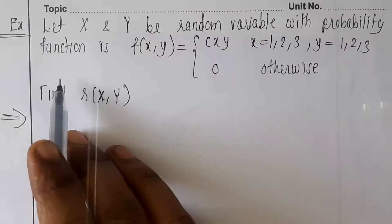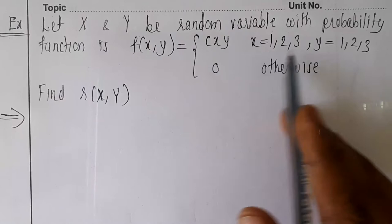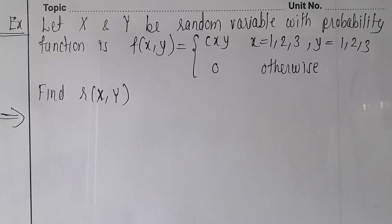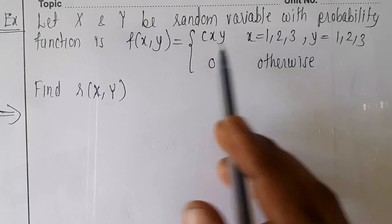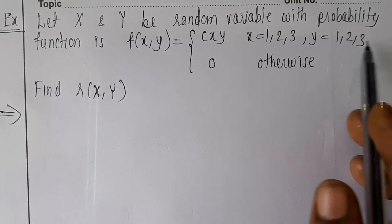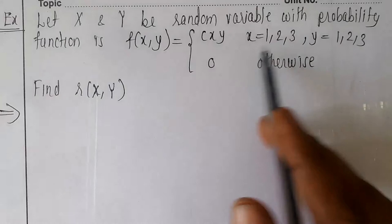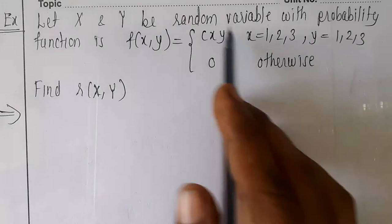Let's see an example. Let X and Y be random variables with probability function f(x,y) = c·x·y for x = 1, 2, 3 and y = 1, 2, 3, and 0 otherwise. First, we check whether this is a continuous or discrete case. Since specific values of x and y are given (1, 2, 3), this is a discrete function, not continuous.